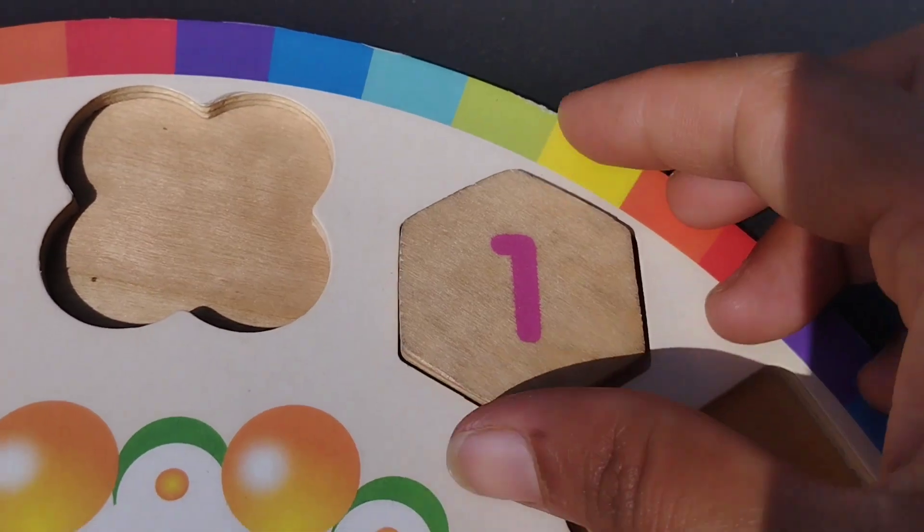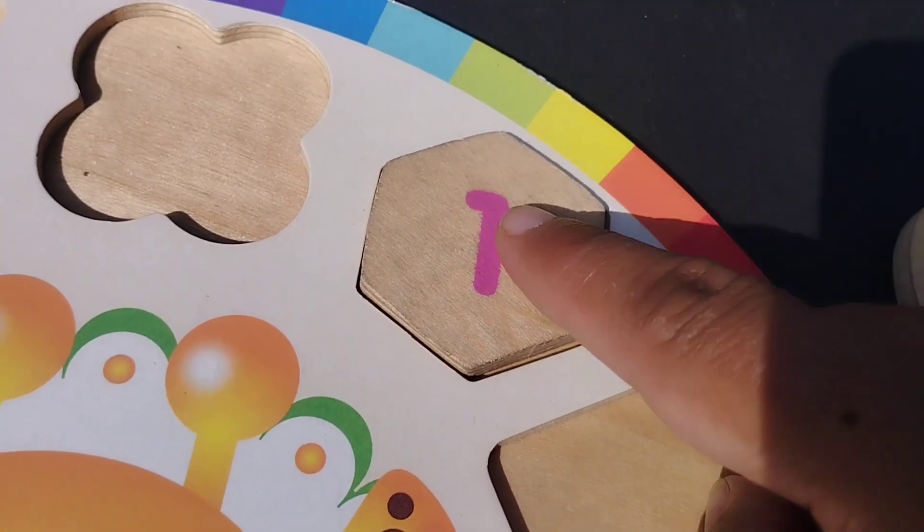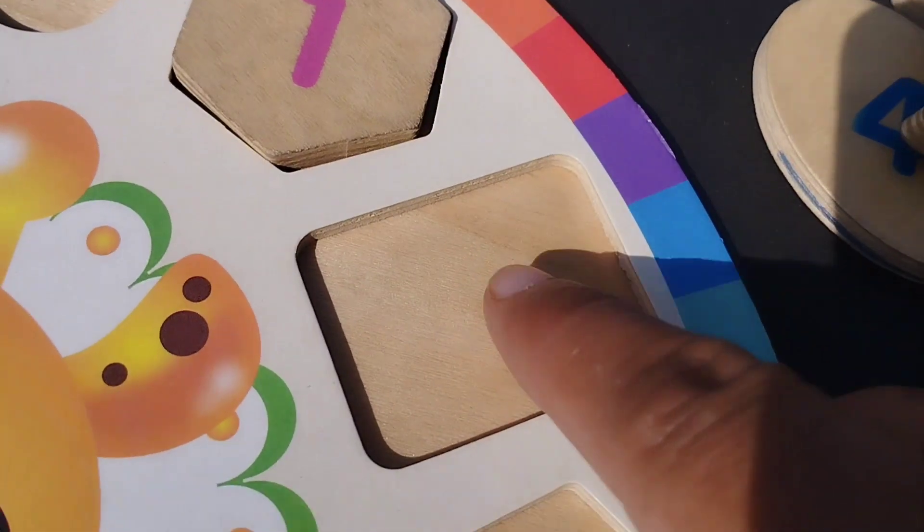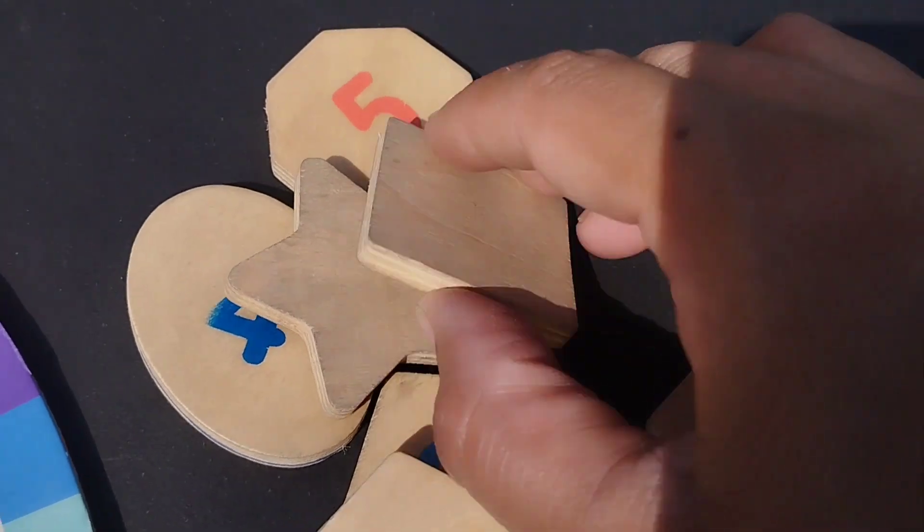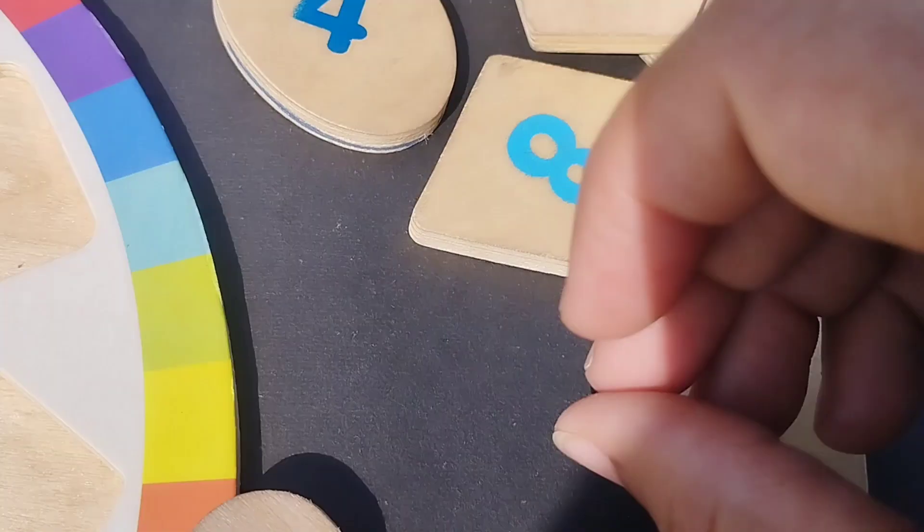The first shape is hexagon. The number is one. Hexagon shape. Hexagon has six corners. The next number is number two.